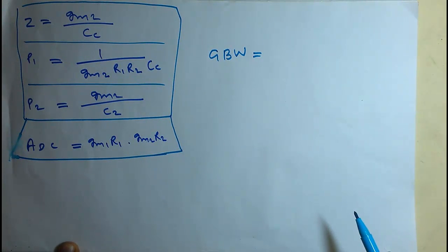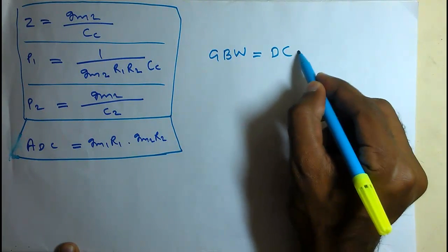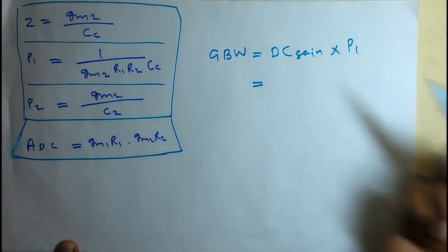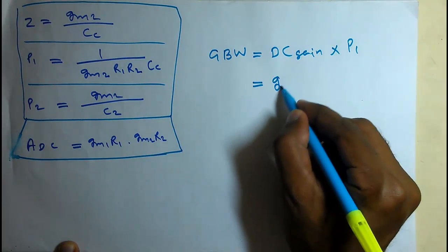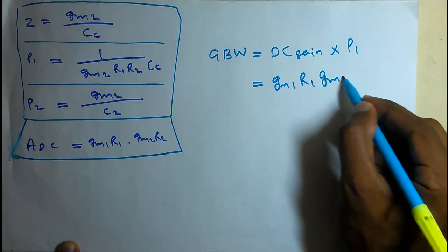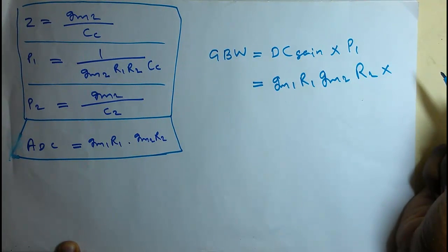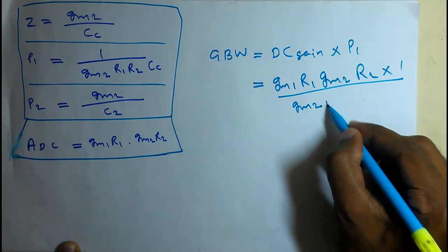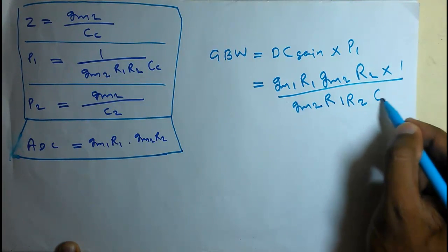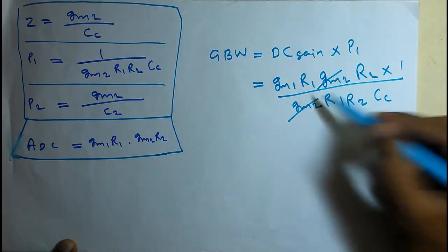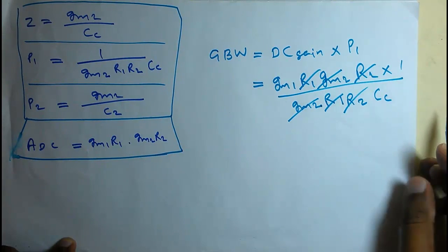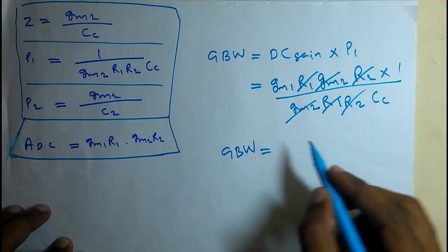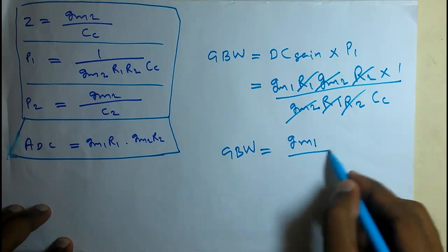Gain bandwidth product is the DC gain into the first pole. DC gain we have GM1 × R1 × GM2 × R2, and the first pole is 1 / (GM2 × R1 × R2 × CC). We can cancel GM2, R1, and R2. So finally, the gain bandwidth product — or unity gain bandwidth — is GM1 / CC.